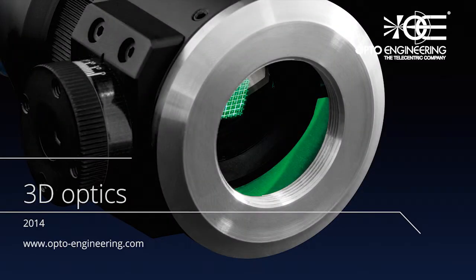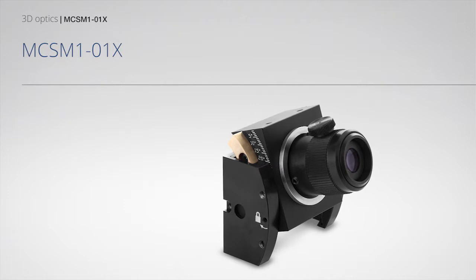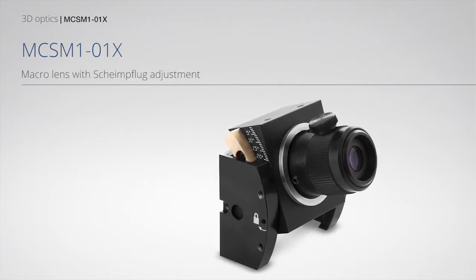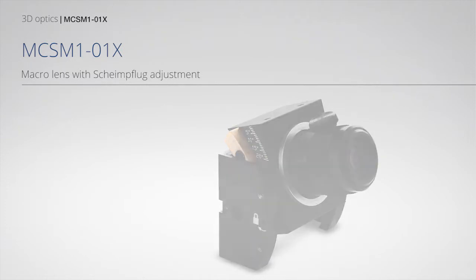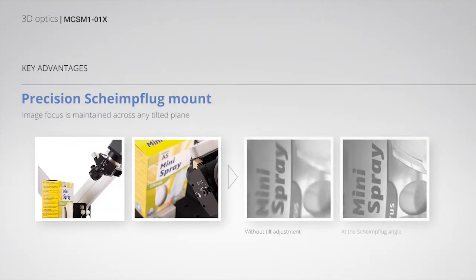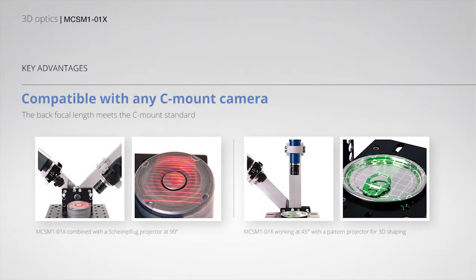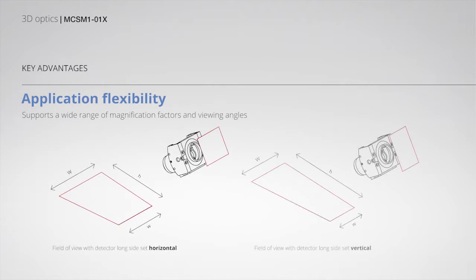3D Optics MC SM101X macro lens with Schaimflug adjustment, precision Schaimflug mount, compatible with any C-mount camera — application flexibility.